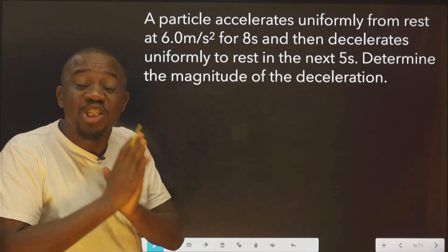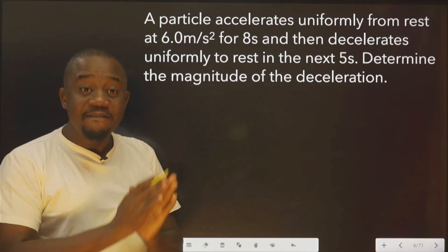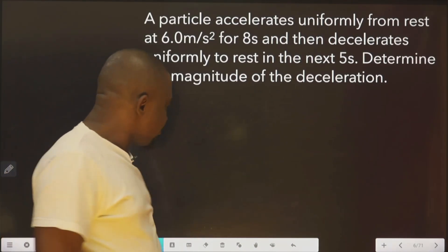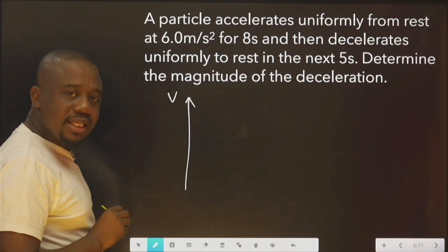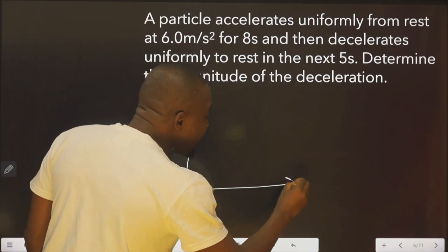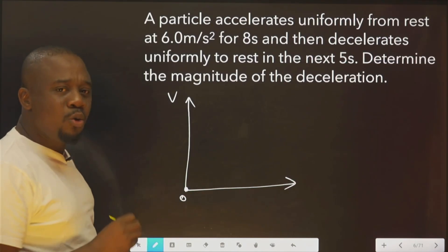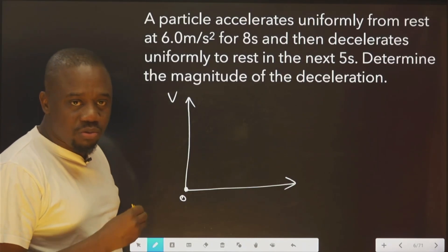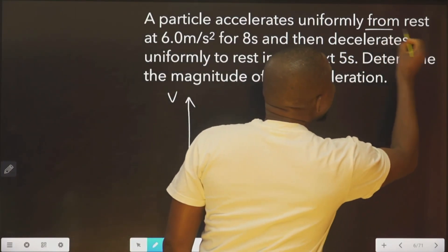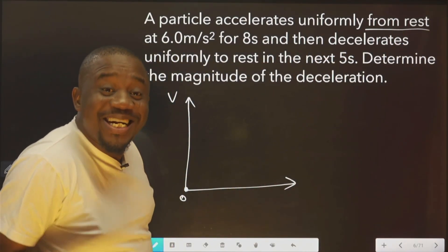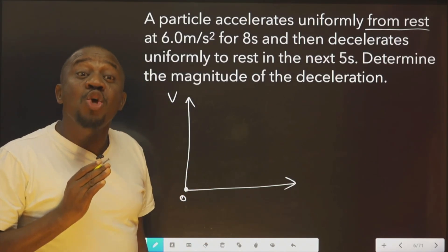If you want to solve a question like this correctly, as you are reading, plot the graph — that is, a velocity-time graph. This is the velocity line, and this is the time line. This position here is 0. Why am I starting from 0? Because I saw 'from rest' — rest is 0.